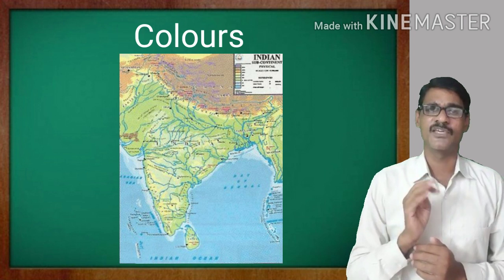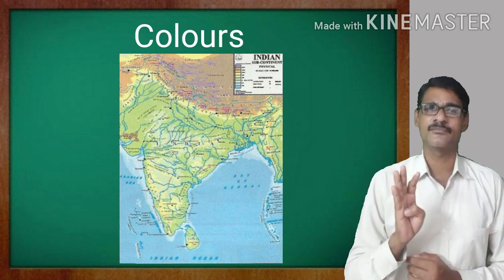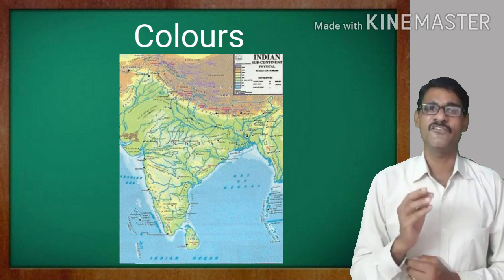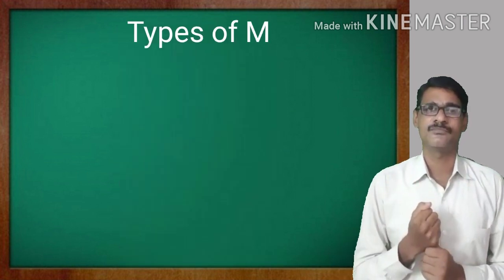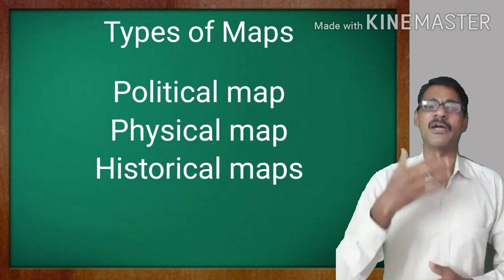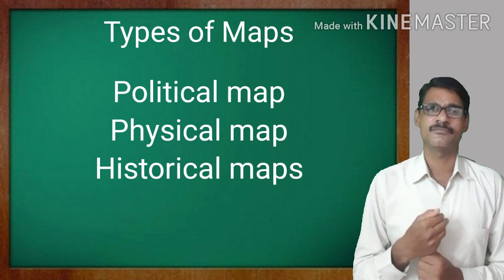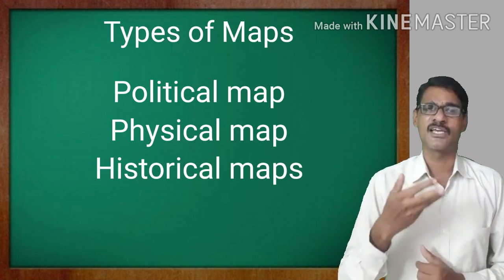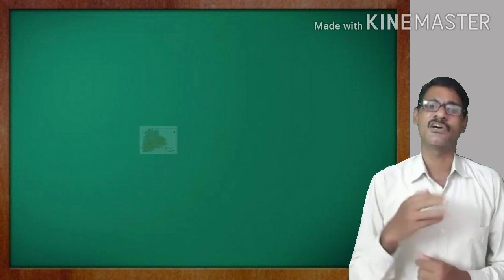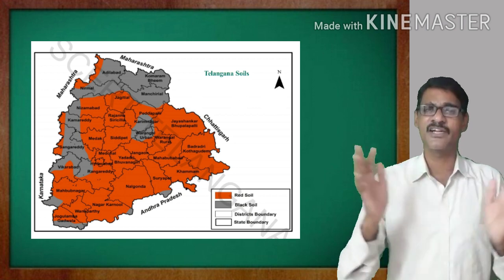Finally, we can conclude that for every map we should have: directions, scale or distance, and symbols. Colors may also be used when required. There are also a variety of types of maps — political map, physical map, outline map, rain map, forest map, soil map, temperature map, and historical map. These are the different types of maps.